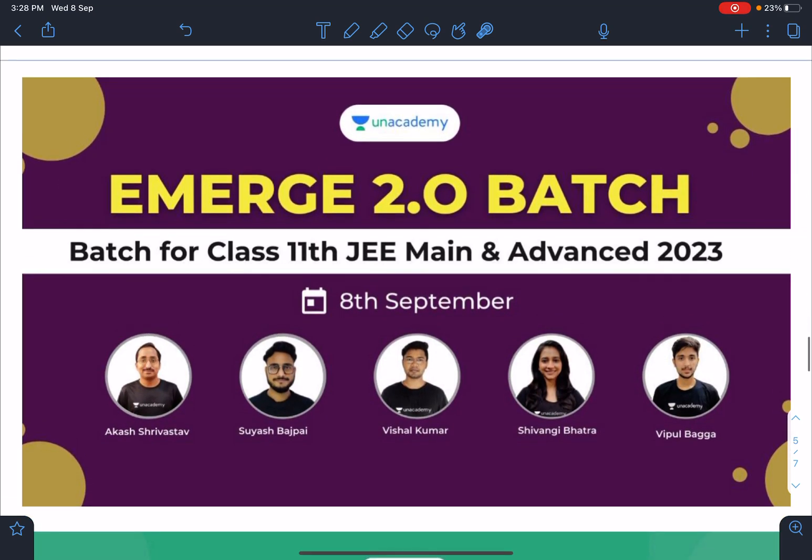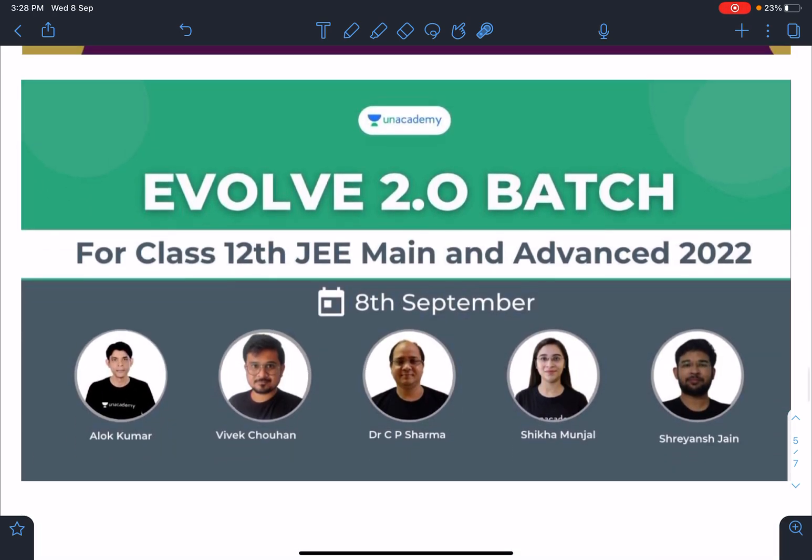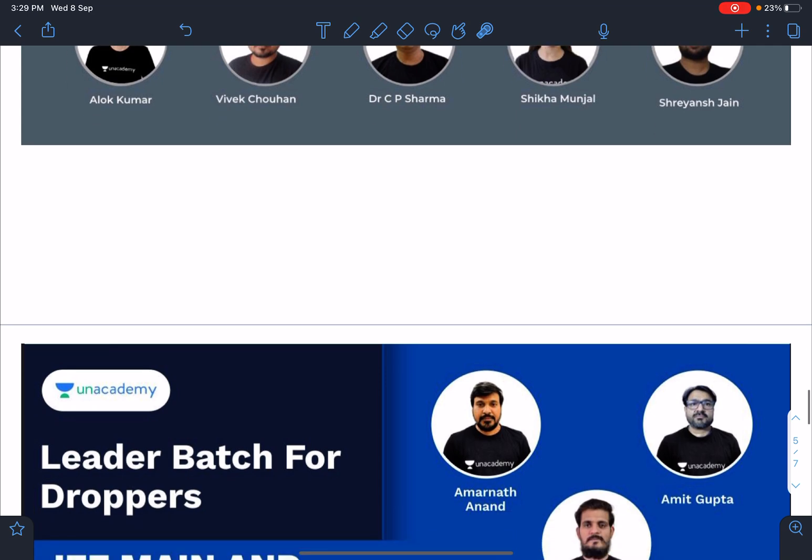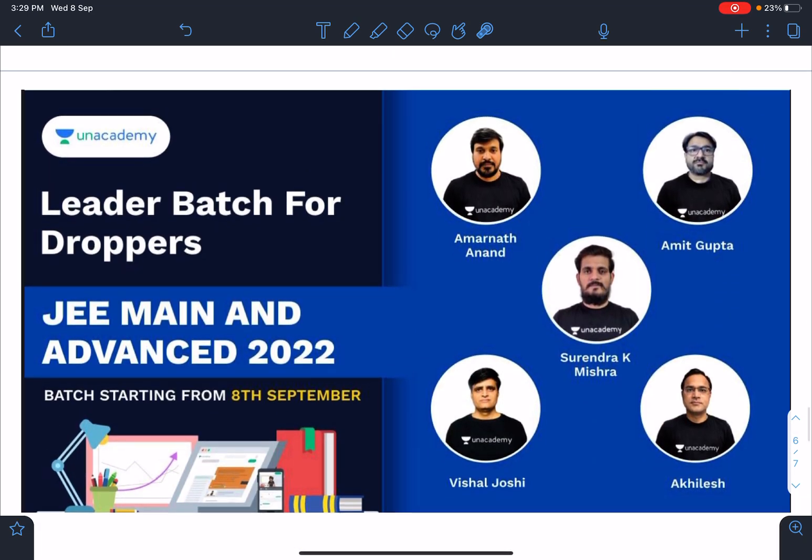And these are some of the batches starting: Emerge 2.0 for JEE mains and Advanced 2023, it is starting from 8th of September. Similarly, there is Evolve 2.0 batch which is for class 12 JEE mains and Advanced 2022, 8th September. And there is another one here. You can see there's a leader batch for droppers and it will be starting on again 8th September. This is for JEE mains and Advanced 2022. This is for droppers.